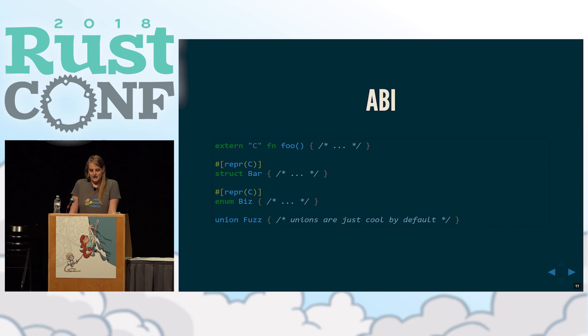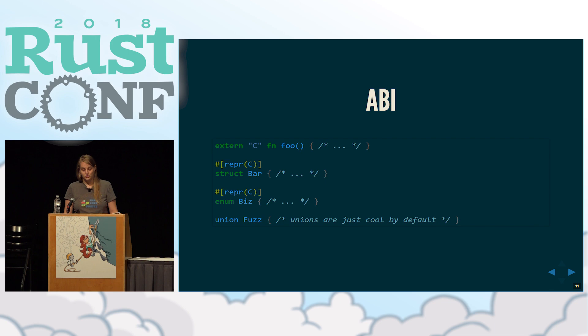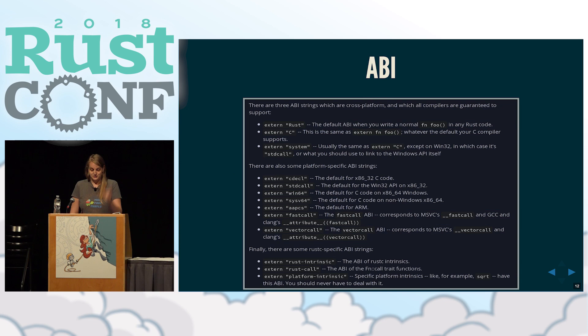In Rust, we use the extern keyword followed by a string to specify the ABI we're using - for example, extern C. For structures and enums, we need to use the repr(C) macro to tell the compiler that we want them to look like their C variants. By default it says extern Rust; you can put that in your code but it won't change anything. There are a lot of different ABIs you can target - most are platform-specific - and usually you'll just use extern C unless you're doing something very unusual.